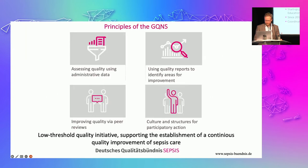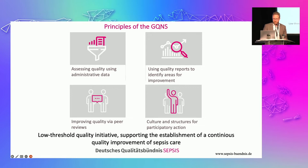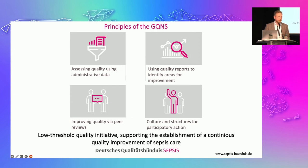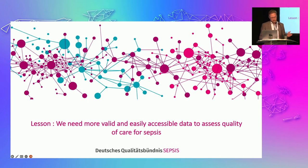We have four core principles: we assess quality using administrative data; we use quality reports to identify possible areas for improvement; we offer participating hospitals peer reviews, which means qualified physicians and nurses visit another hospital, do chart reviews, and discuss problems and solutions with local clinicians; and we have a structure for participatory action, which means members of the hospitals are the driving forces of this collaborative, providing ideas and educational materials.